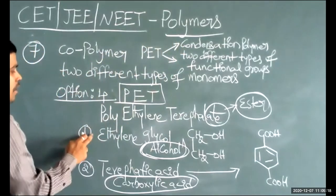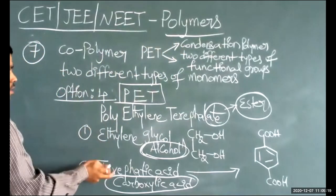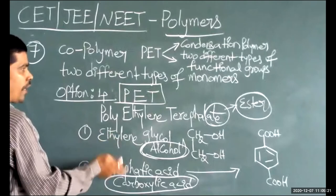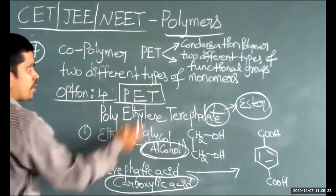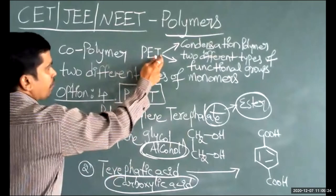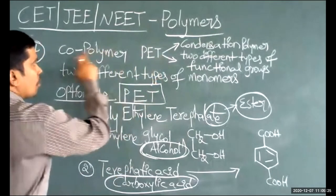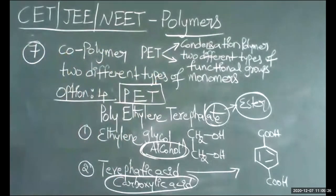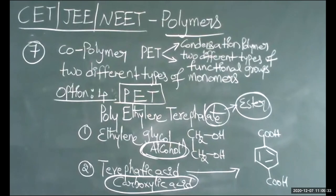Therefore, PET, that is polyethylene terephthalate, is an example of a condensation polymer having two different types of monomers. Hence PET is also an example of a copolymer.